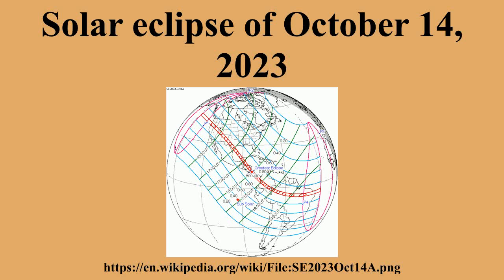An annular solar eclipse will occur on October 14, 2023. A solar eclipse occurs when the Moon passes between Earth and the Sun, thereby totally or partly obscuring the image of the Sun for a viewer on Earth.